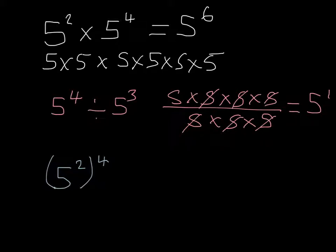And if you notice, one of the ways I can get here is: I've got four 5s multiplying together, and I divide that by three 5s multiplying together — I can do 4 take away 3, which gives me 1.